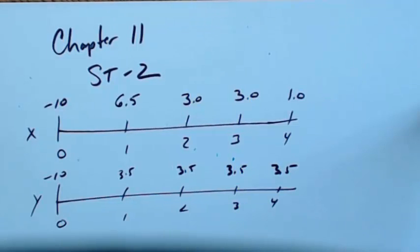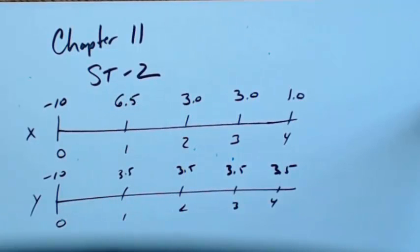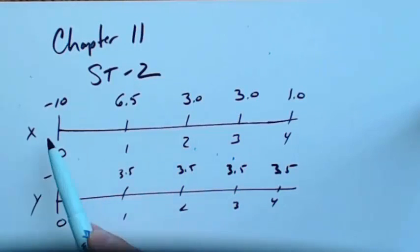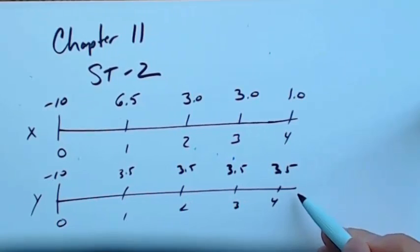This video covers Chapter 11, specifically problem ST-2 on page 395 of your textbook. It's a capital budgeting problem covering the main topics of the chapter. It asks us to compute the net present value, internal rate of return, modified internal rate of return, payback, and discounted payback periods for two projects, Project X and Project Y. Here are the cash flows laid out as shown in the text.